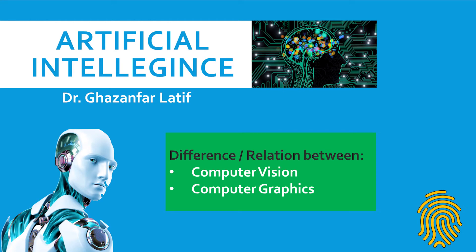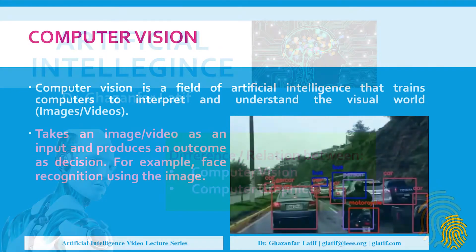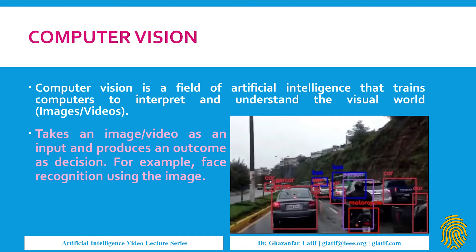In computer vision, we normally give images or vision-based data like videos and graphics as input, and we apply some algorithms that are used to take decisions. The output is not mandatory to be images — the input must be images or visual data, and the output will be some sort of decision making.